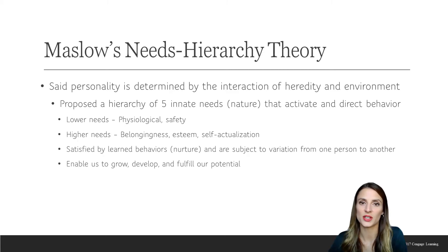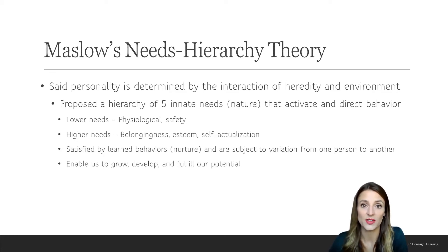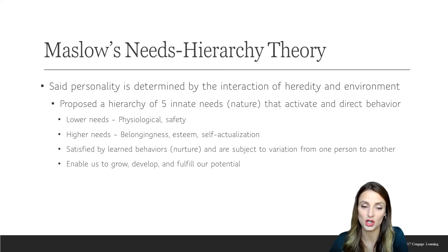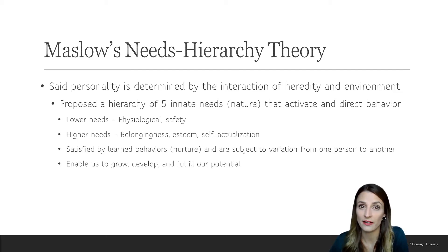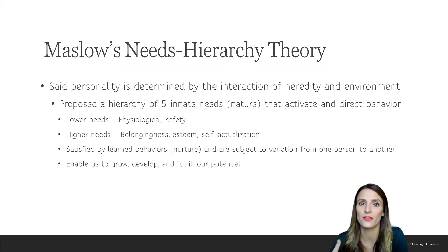Maslow said that personality is determined by an interaction between nature and nurture. He proposed a hierarchy of five innate, inborn needs that activate, direct, and guide behavior. The lower needs are the physiological and safety needs. The higher needs are the belongingness/love, esteem, and self-actualization needs. These needs vary from one person to another — your needs are not the same as my needs. You may be more motivated by self-actualization; I may be more motivated by safety needs.